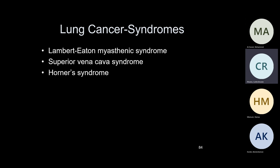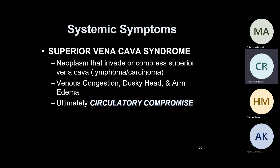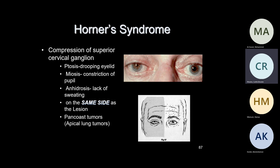Know your syndromes. Lambert-Eaton myasthenic syndrome: a paraneoplastic syndrome usually with small cell carcinomas, due to autoantibodies to neural calcium channels. It does not respond to anticholinesterases the way myasthenia gravis does. You see weakness of proximal legs and arms. Superior vena cava syndrome: neoplasms that invade or compress the SVC — lymphoma or lung cancers — causing venous congestion, dusky head and arm edema, and circulatory compromise. Horner syndrome is all on the same side — ptosis, miosis, and anhidrosis — usually with a Pancoast tumor, where the tumors are at the tip of the lung.